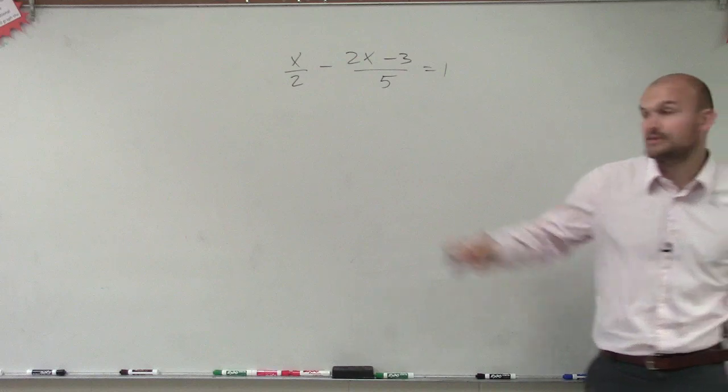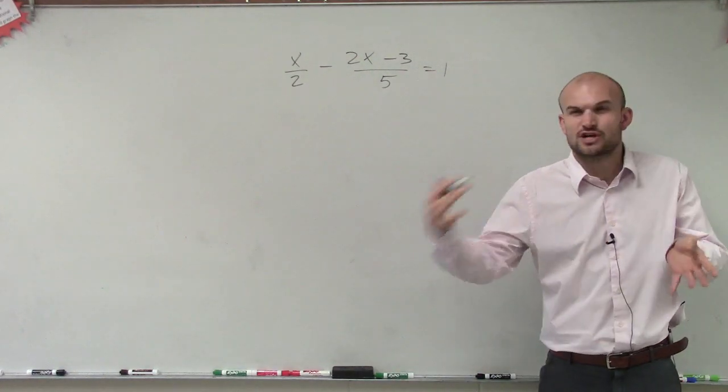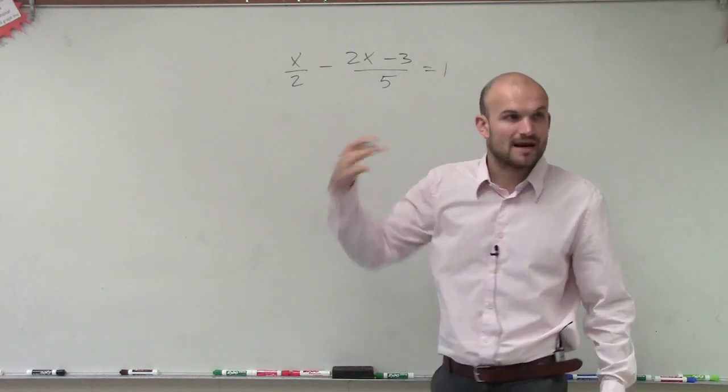Whenever you have a rational equation, that means you have a couple of rational expressions. We could get them to become common denominators, combine them, and then solve them that way. But the easiest thing we like to do is get rid of our fractions.